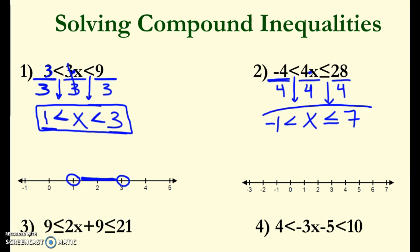Then 28 divided by 4 gives me positive 7, so that's my final answer. Notice this time I'm going to have an open circle at negative 1 and a closed circle at positive 7. Since it's the same idea with x squished in the middle, I'm going to end up with the dumbbell look we talked about in the last video.